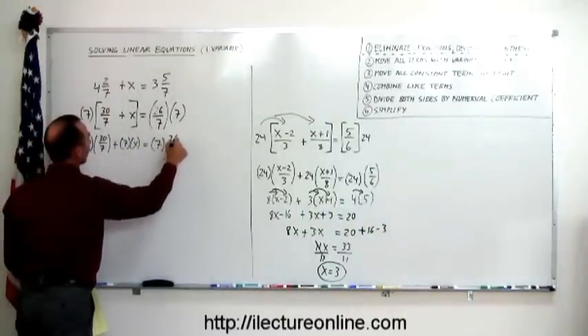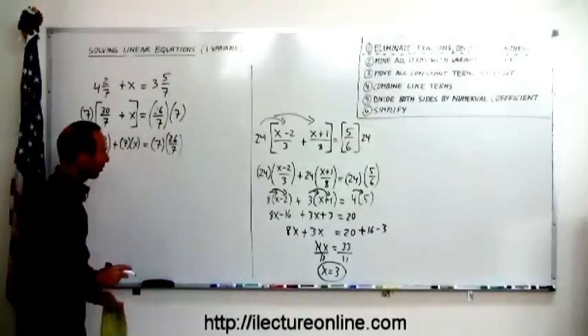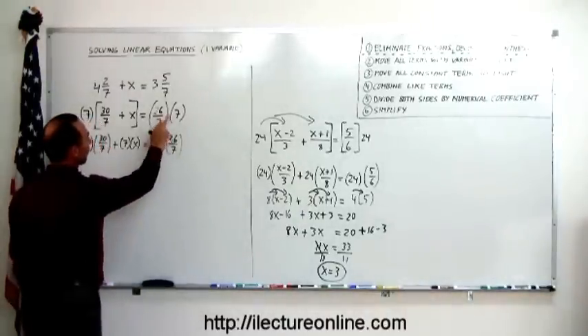Then we distribute those, so this becomes 7 times 30/7 plus 7 times x equals 7 times 26/7. Notice, if I write 26/7 times 7 or 7 times 26/7, it's the exact same thing. They call that the commutative property. When you multiply two numbers together, you can switch them around. Okay, now 7 divided by 7 cancels out, so we're left with 30 plus 7x equals 7 divided by 7 cancels, so we're left with 26.